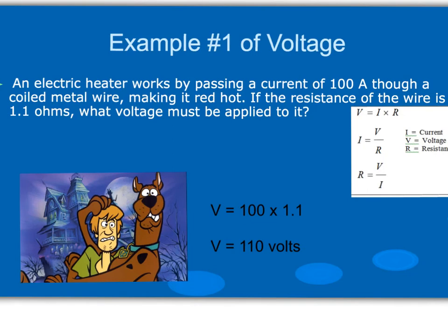In this problem, we are solving for voltage. Looking at Ohm's law, we have voltage equals current times resistance. This equation, where current equals voltage divided by resistance, and resistance equals voltage divided by current — these are all forms of Ohm's law. We've taken one equation and rearranged it to solve for each of the missing components. If you forget, you can always use voltage equals current times resistance, plug in your numbers, and solve for the unknown.